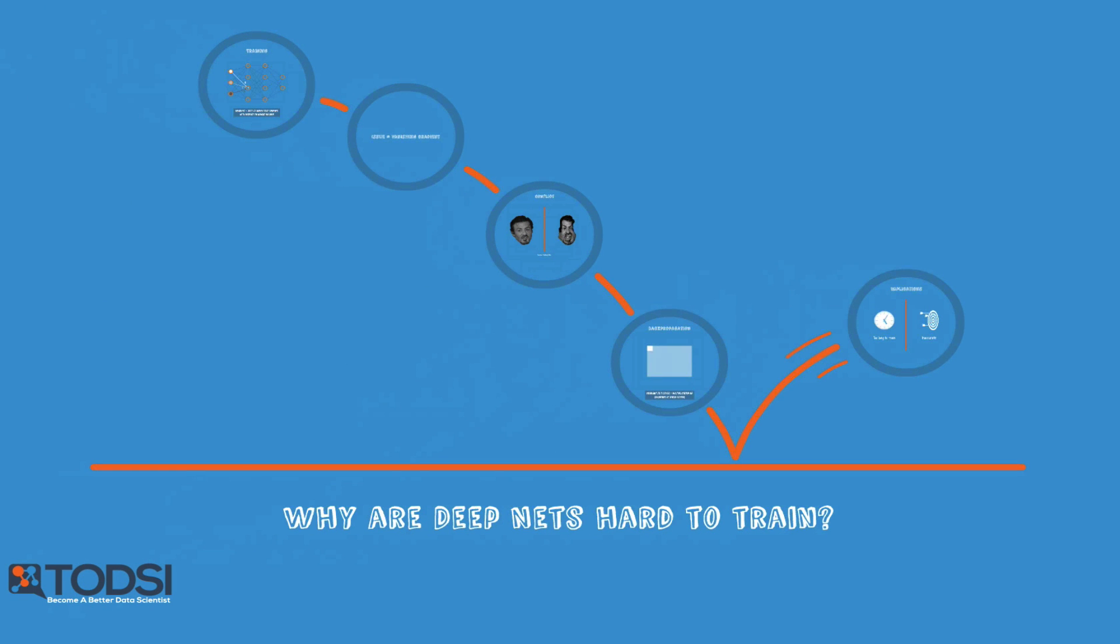Up until 2006, deep nets were still underperforming shallow nets and other machine learning algorithms. But everything changed after three breakthrough papers published by Hinton, LeCun, and Bengio in 2006 and 2007.